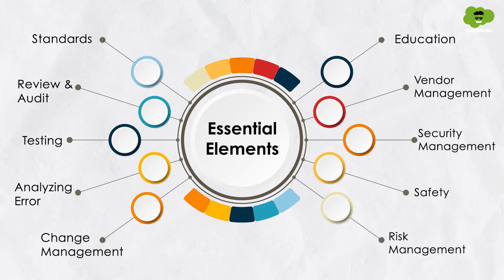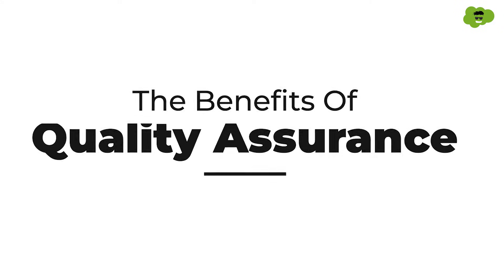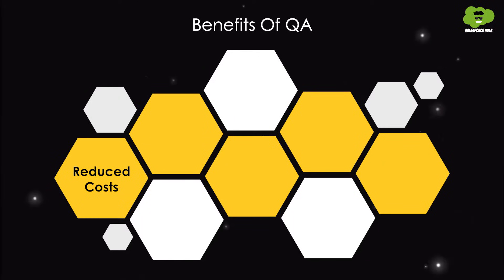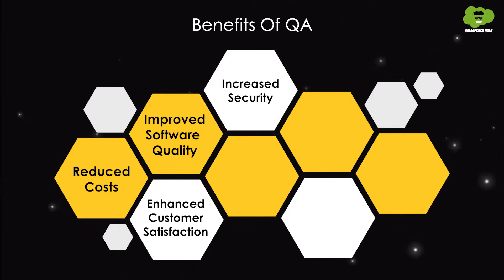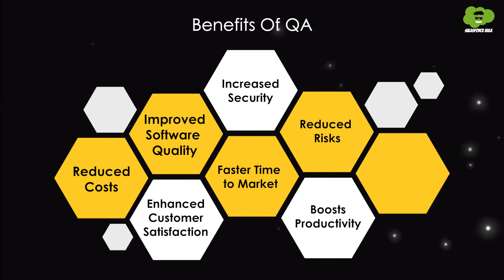Now let's discuss the benefits of QA. The quality assurance process improves quality and reduces risk in the final product. There are various benefits it provides to the organization as well as users. These include: reduced cost, improved software quality, enhanced customer satisfaction, increased security, faster time to market, boosted productivity, reduced risk, and protection of brand reputation.